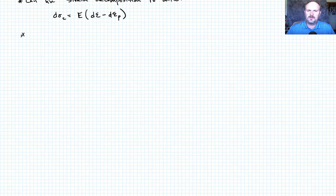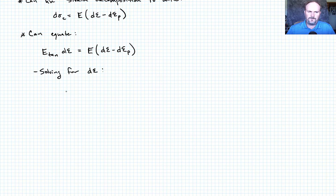So we can equate these and solve for the total strain increment quantity during yielding. So if we equate them, we end up with e tan times d epsilon is equal to e times d epsilon minus d epsilon p. And we can solve for d epsilon, and we end up with that d epsilon is equal to e over e minus e tan times d epsilon p.